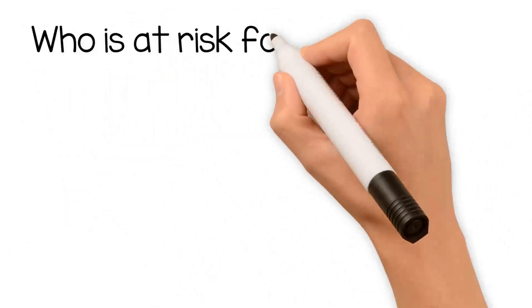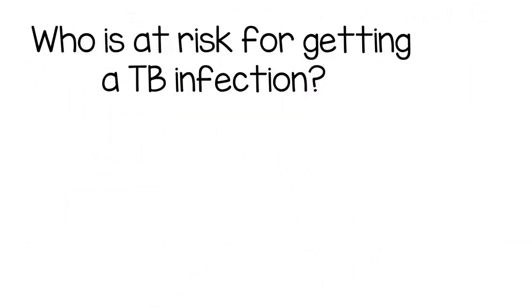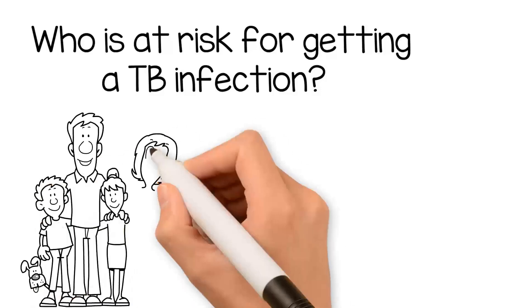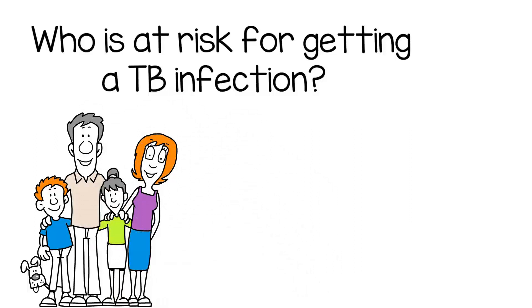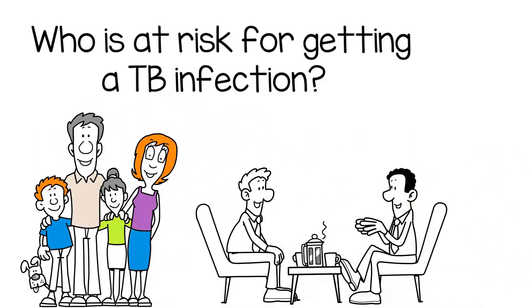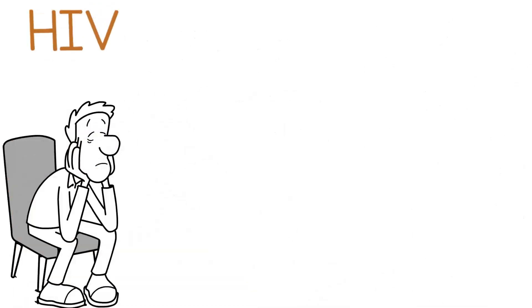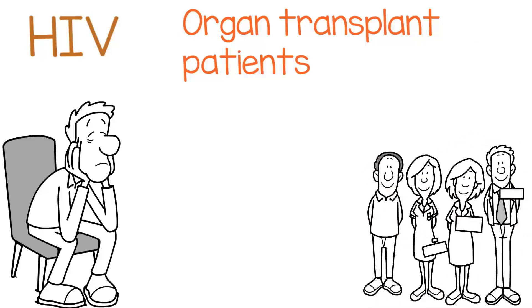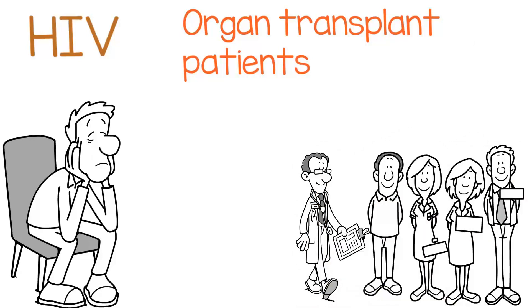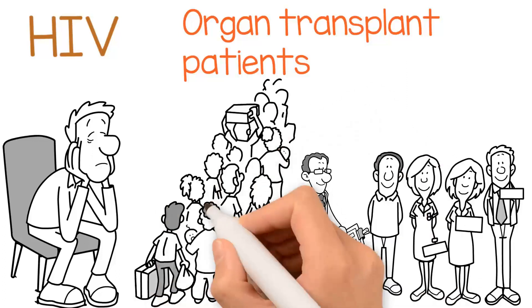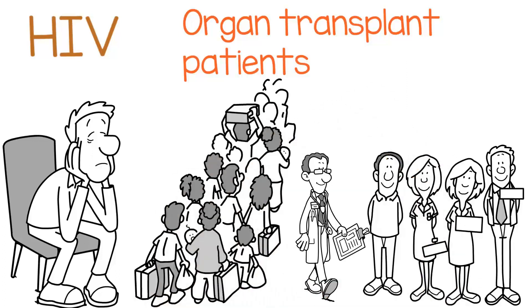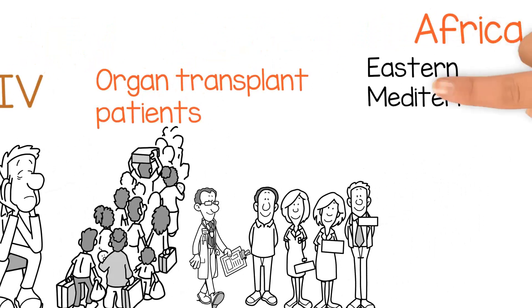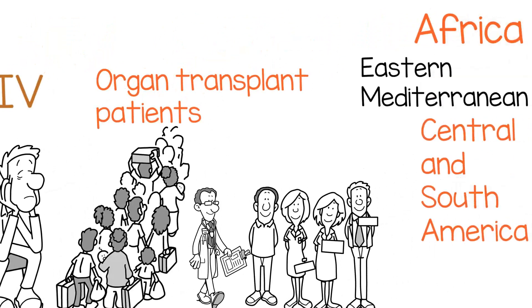Who is at risk for getting a TB infection? People at highest risk include individuals in close contact with a person with infectious TB, such as family, roommates, friends, or co-workers; people with weakened immune systems due to HIV, organ transplants, or other conditions; healthcare workers exposed to people with infectious TB; and individuals from regions where TB infection is common, such as Africa, Eastern Mediterranean, Central and South America, and Asia.